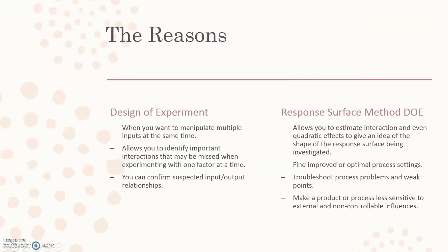What are the reasons for doing a DOE? You would do a DOE when you want to manipulate multiple inputs at the same time. It allows you to identify important interactions that may be missed when experimenting with one factor at a time, and you can confirm suspected input-output relationships.